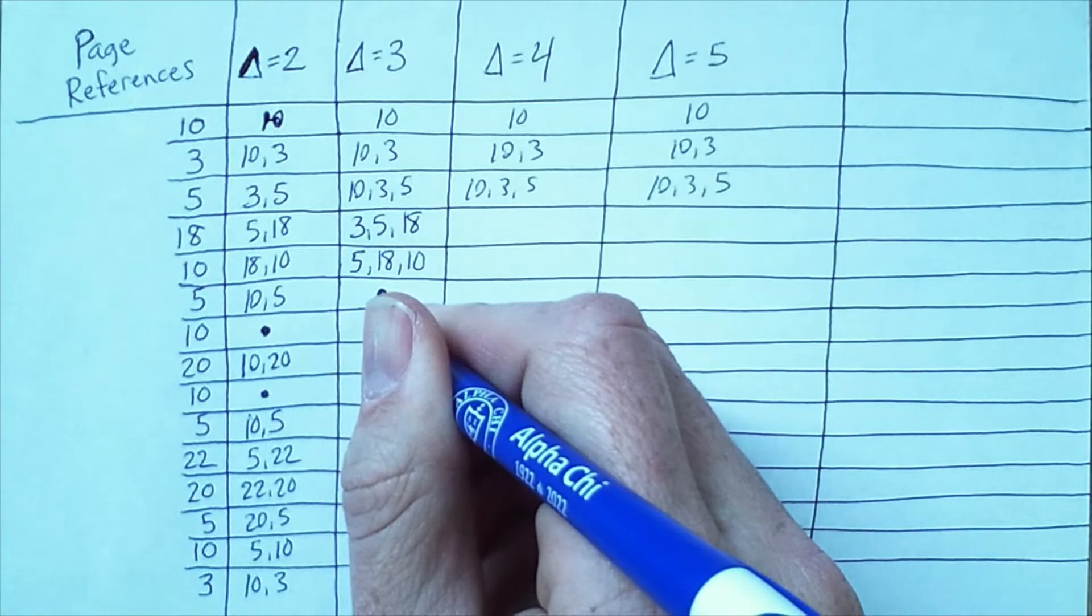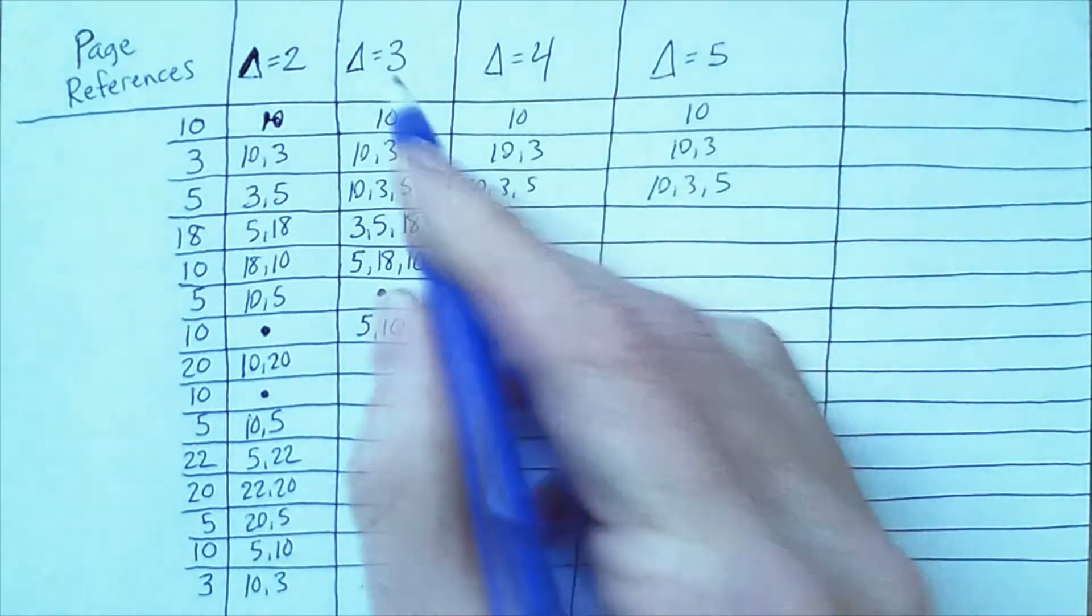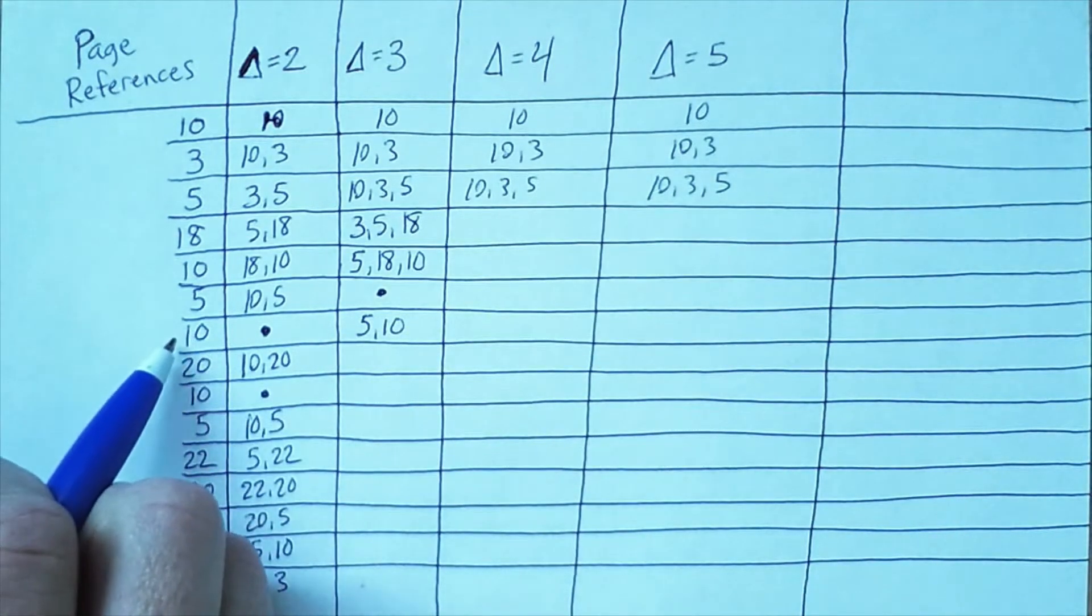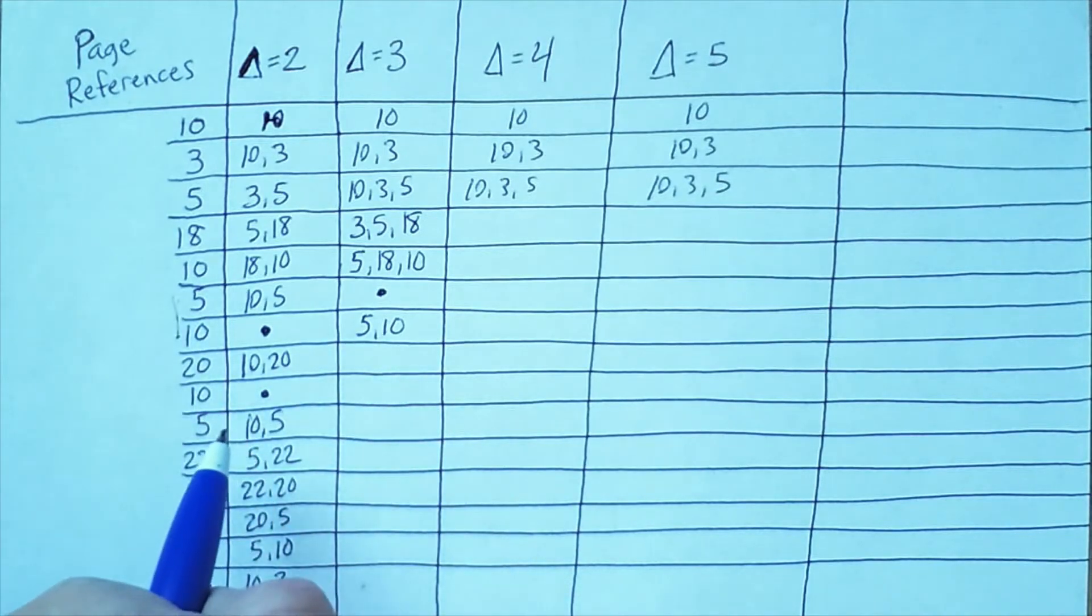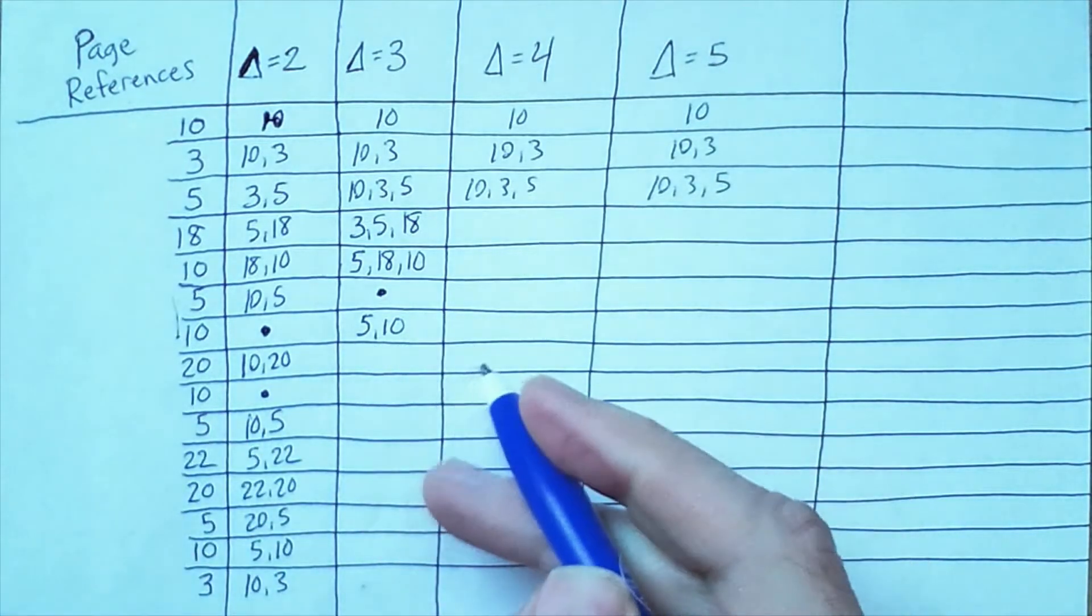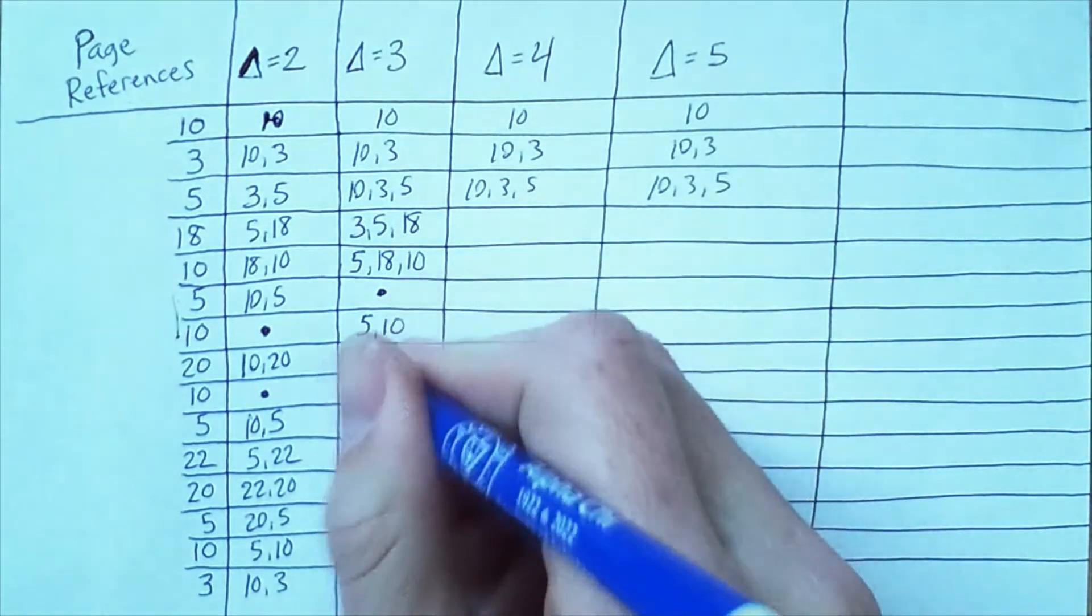Then whenever the working set is consistent, that indicates that we don't have any page faults to worry about. Now as we go along here though, we're going to keep encountering new pages and the working set will not be the same again. So I'll just finish out this column now.